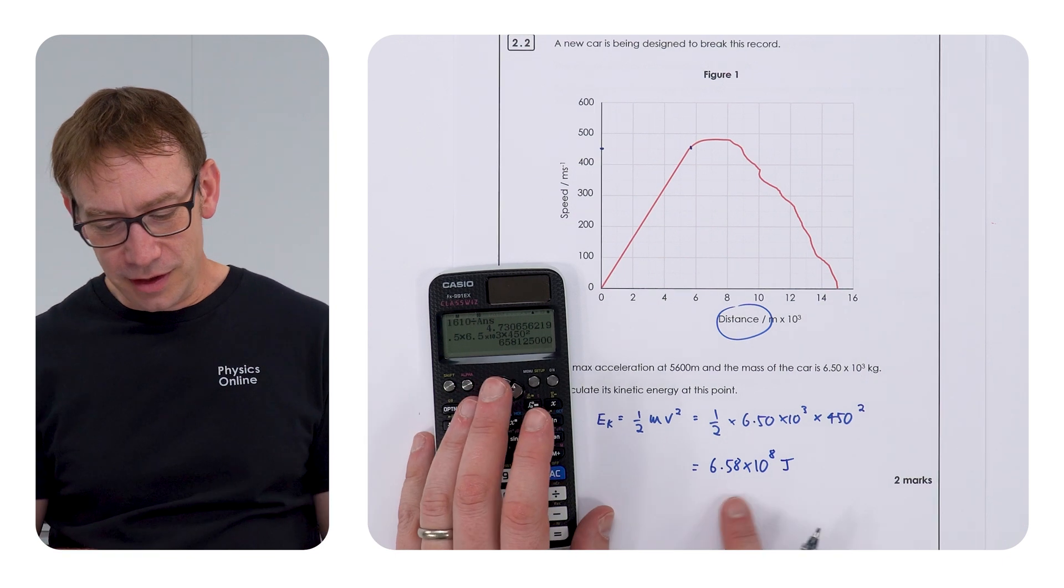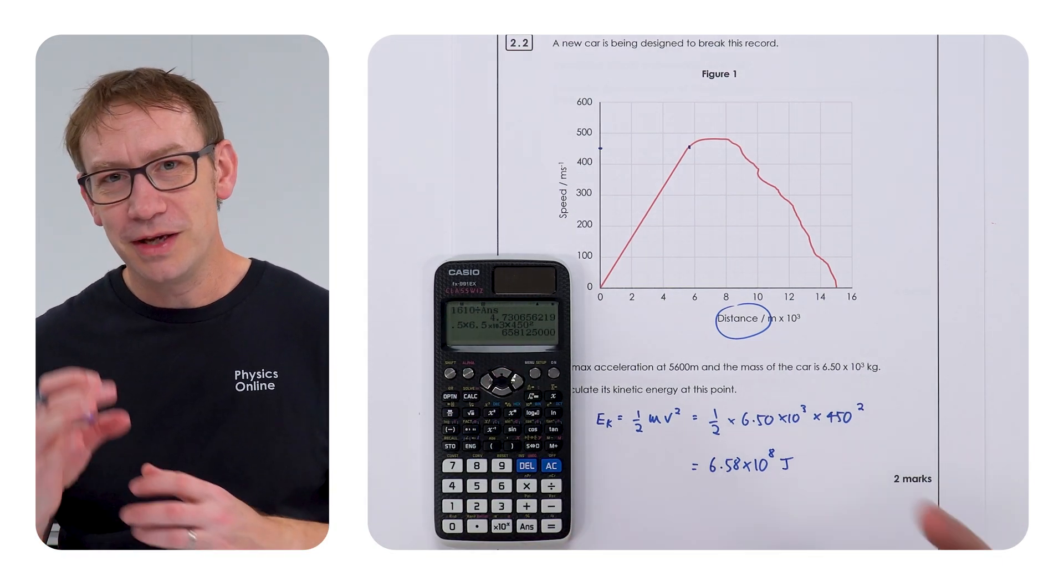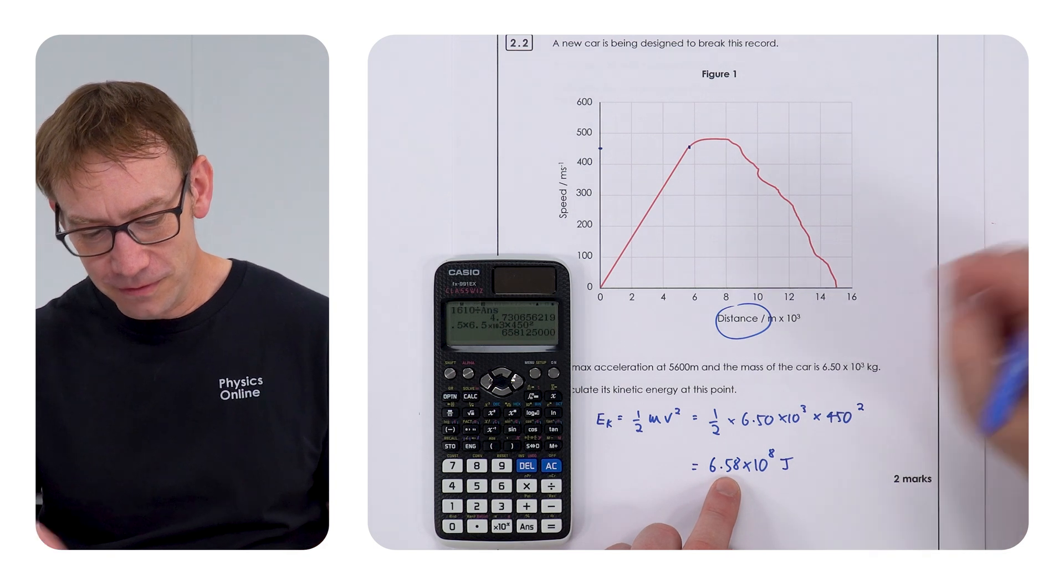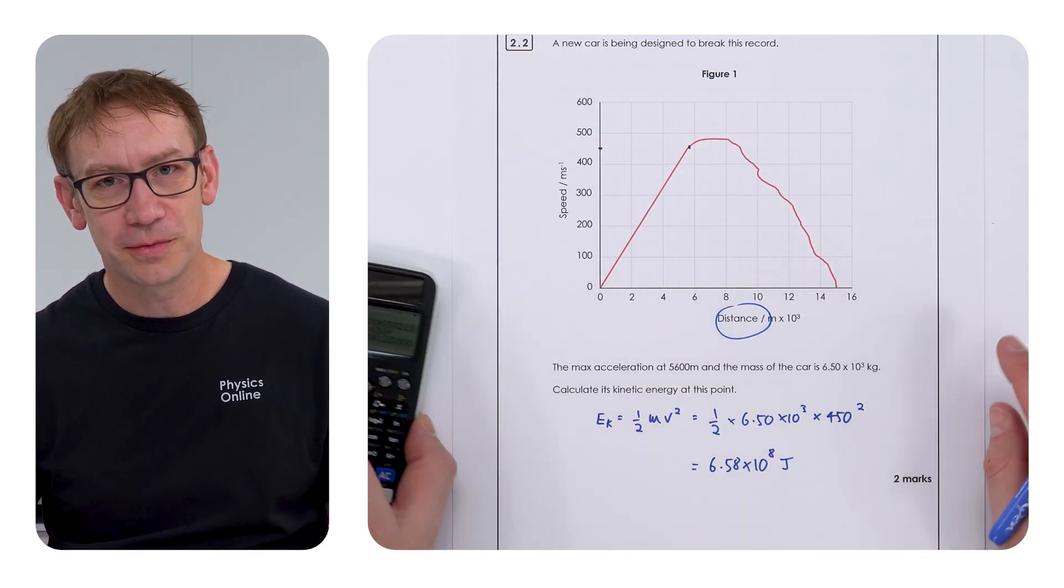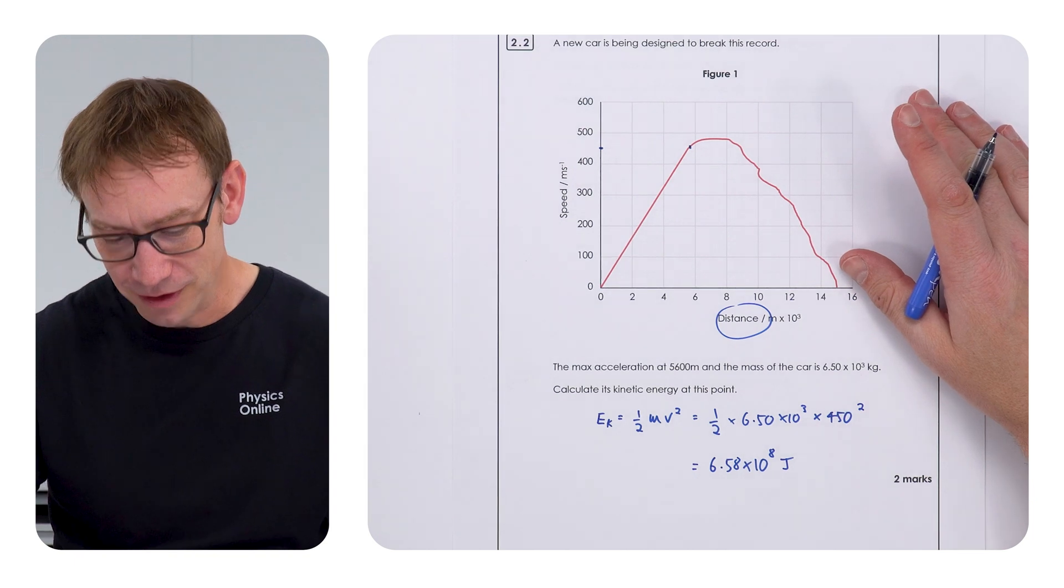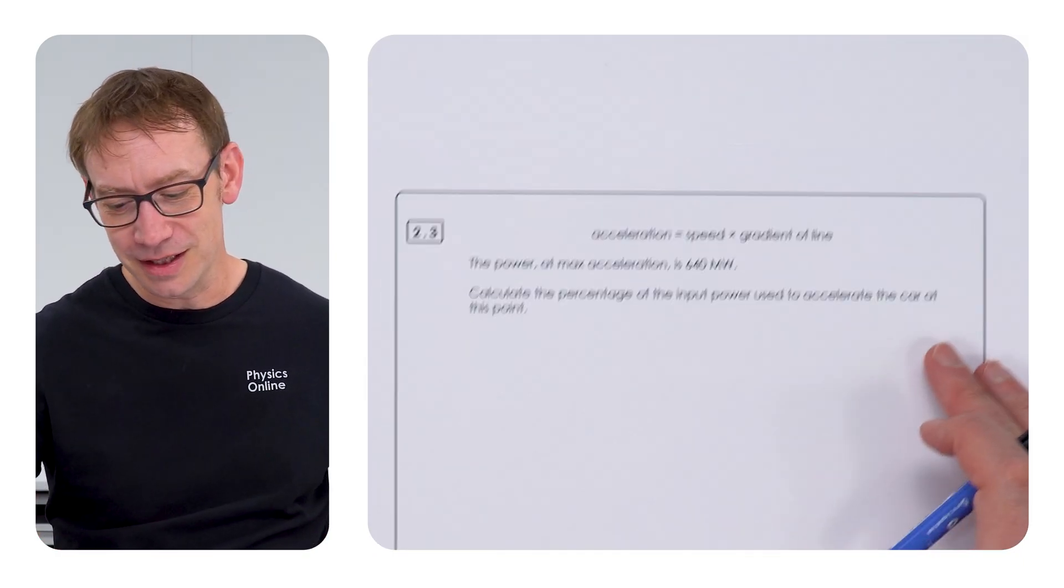So I think that's an appropriate answer. I guess you could probably justifiably give this to two significant figures because you're reading data off a graph. But I think 6.58 or 6.6 times 10 to the 8 joules was the correct answer. And I think that that was an easy question. So even though some bits are difficult, there's going to be lots of easy parts across questions in your exam. Now, the next bit.